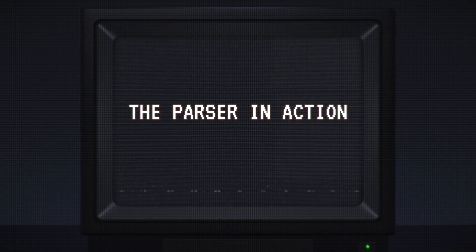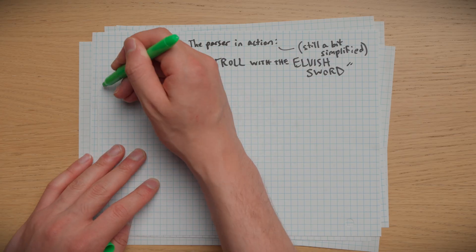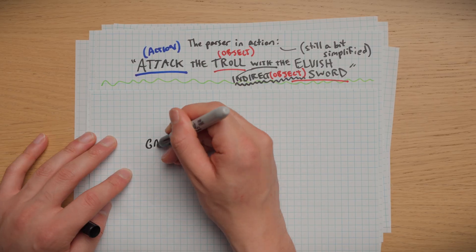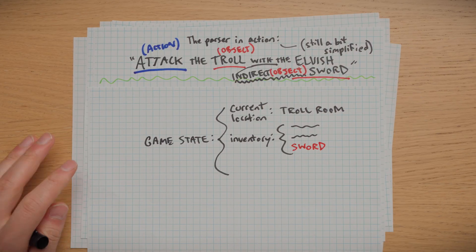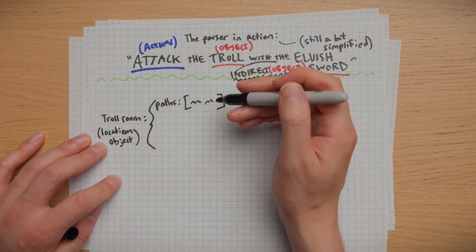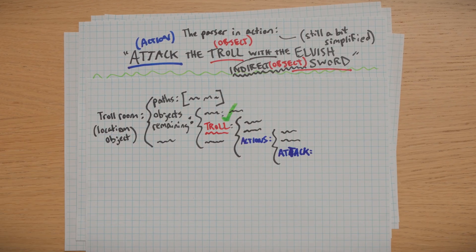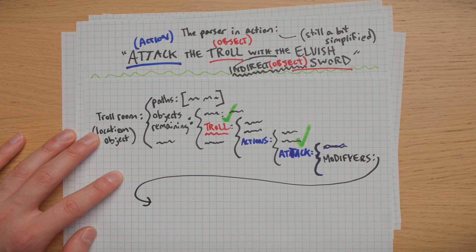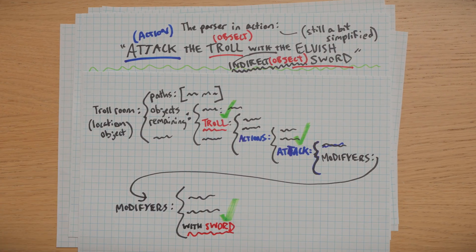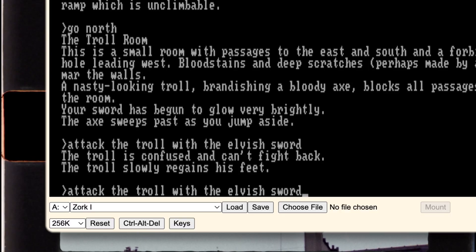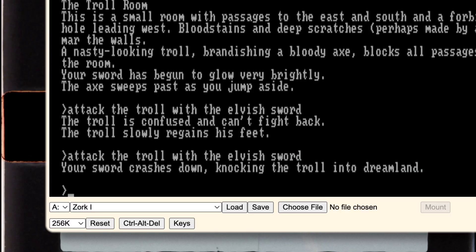This is the theory — but what does it look like in practice? Let's attack the troll with the elvish sword. First, each word is checked against Zork's massive dictionary to match it to its category. The player is trying to use the sword — is that object in the player's inventory? Yes. Does the main object, the troll, exist in our location? Yes. Can we perform the action on this object? Check the troll's properties — yes. Does our indirect object, the sword, modify the attack's action? Yes. We filtered all the way down until we got a result. The computer gives us back one line: 'Your sword crashes down, knocking the troll into dreamland.' And this process repeats with every single input.